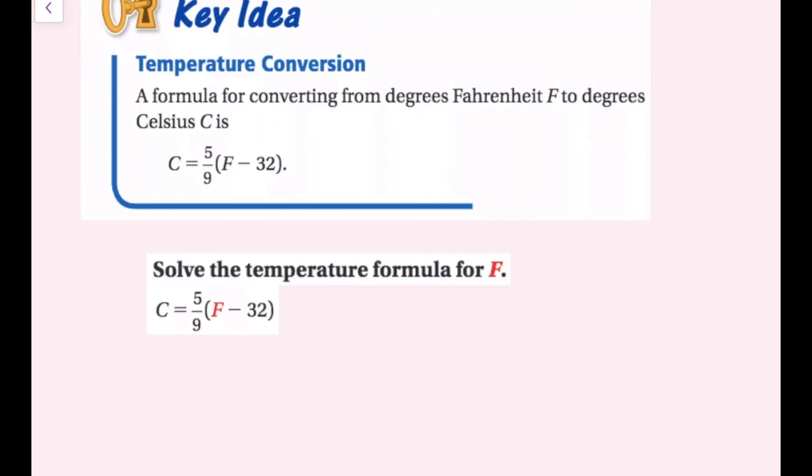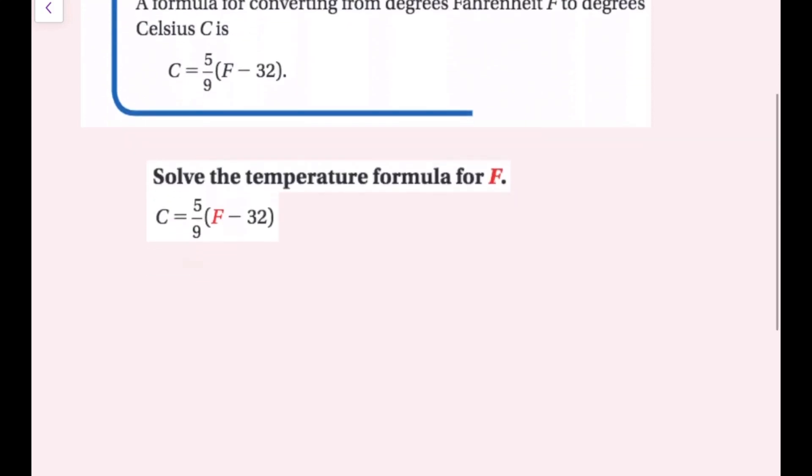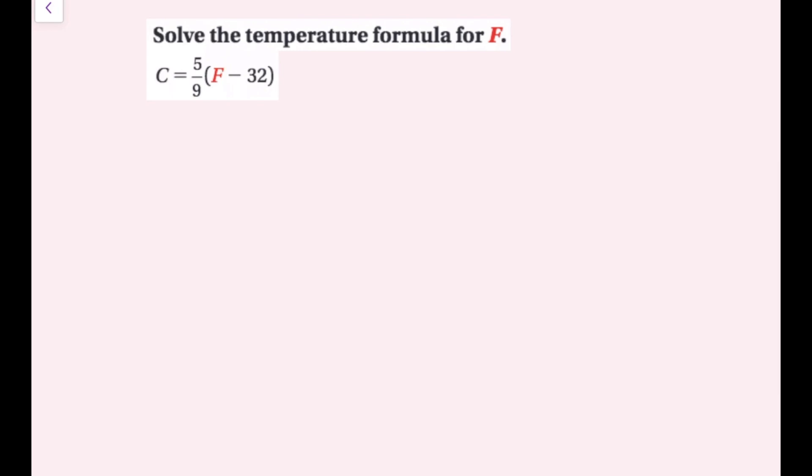We're going to talk about temperature conversion right now. A formula for converting from degrees Fahrenheit F to degrees Celsius C is C equals five-ninths times quantity F minus 32. So we're going to solve this formula for F. So I want to find F, and I know I have C equals five-ninths times the quantity F minus 32. What I could do is I could distribute this, and then get rid of whatever term I have left. But I know that if I multiply five-ninths by negative 32, I'm not going to get an integer or a whole number. So what I'm going to do actually instead is I'm going to multiply both sides by the reciprocal of five-ninths. And the reciprocal of five-ninths is nine-fifths. So I'm going to multiply both sides by nine-fifths.